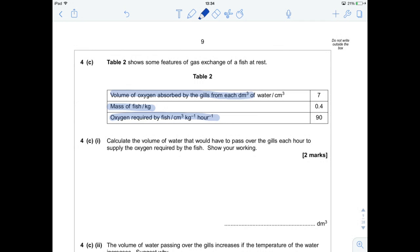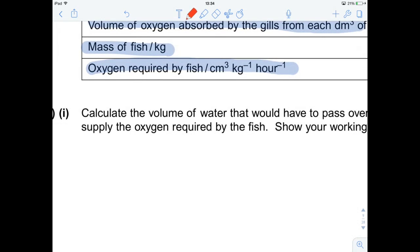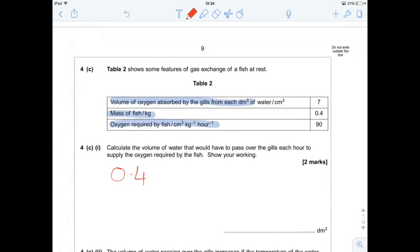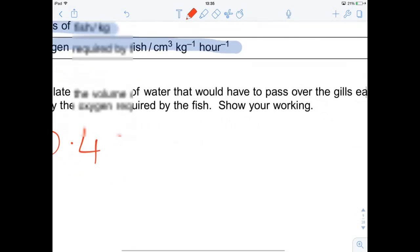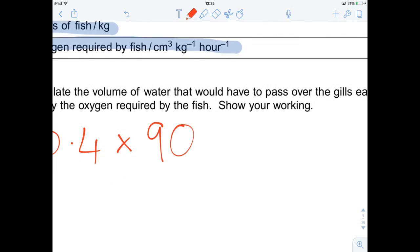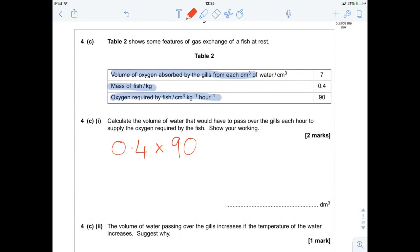So for that, we need to do the mass of the fish, which is 0.4 kilos, times by the oxygen requirement. So 0.4 times by 90. Now, you'll have to bear with me, because I haven't got a calculator at hand. So let me grab that. 0.4 times 90 equals 36.